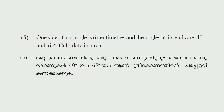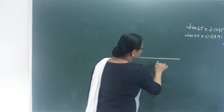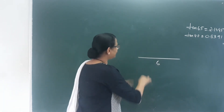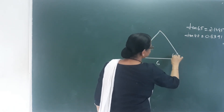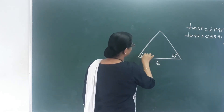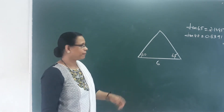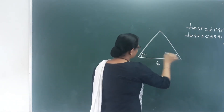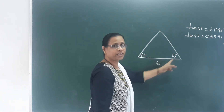Next question: One side of a triangle is 60 centimeters and the angles at its ends are 40 degrees and 65 degrees. Calculate its area. We draw the triangle with base 60 cm, one end angle 40 degrees and the other end angle 65 degrees, and find the area.